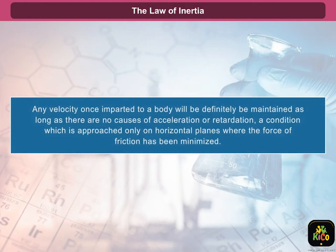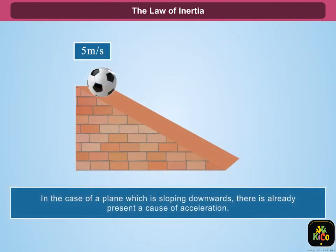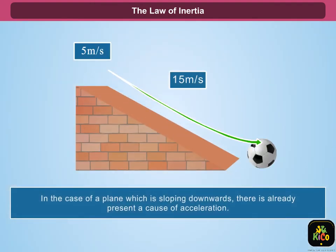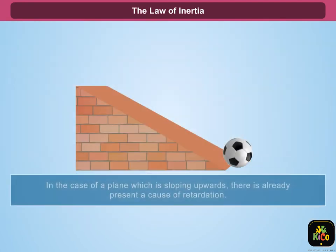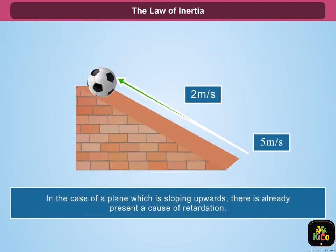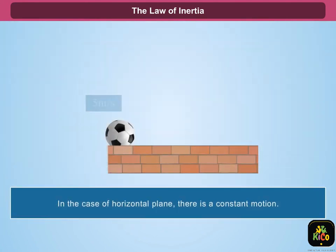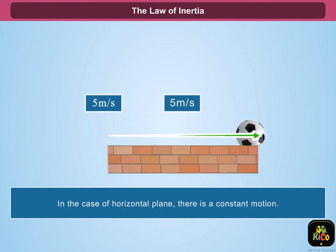From these examples we can conclude that any velocity once imparted to a body will definitely be maintained as long as there are no causes of acceleration or retardation — a condition which is approached only on horizontal planes where the force of friction has been minimized. In the case of a plane sloping downwards, there is a cause of acceleration. In the case of a plane sloping upwards, there is a cause of retardation. In the case of a horizontal plane, there is constant motion.